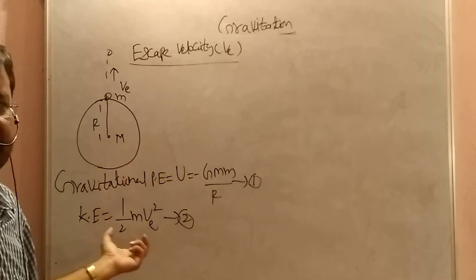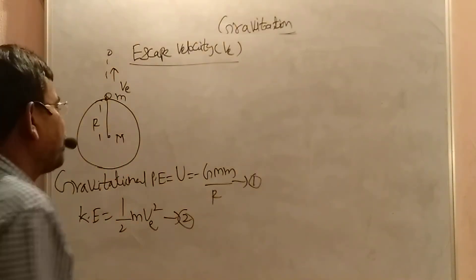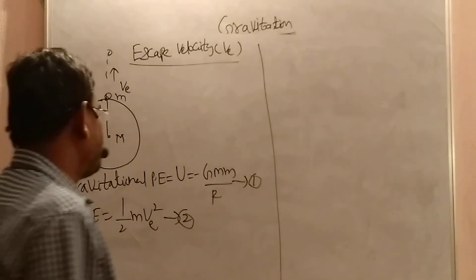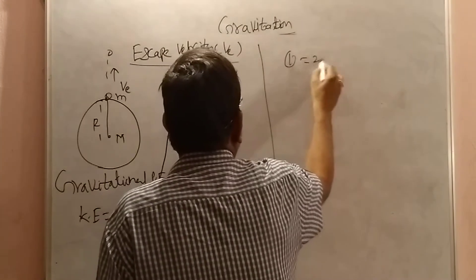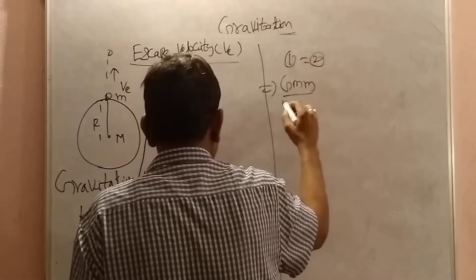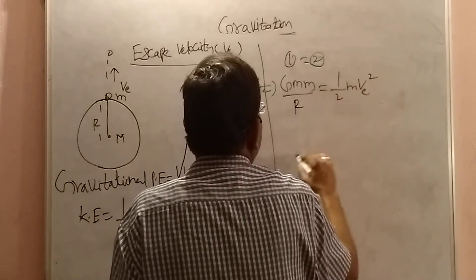If it is very more, it is crossing orbits and going beyond also. Now, in this case we are taking approximately equal. So 1 equal to 2. So G into capital M small m by r, that is equal to half into m into v square.